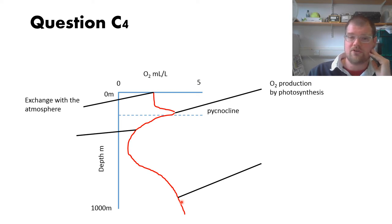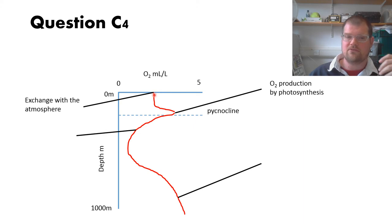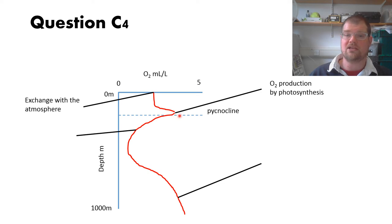There's oxygen production by photosynthesis at the base of the pycnocline. For extra marks, you could have noted that there's not so much photosynthesis going on at the very surface because UV radiation damages some of the cells. Also, the base of the pycnocline is where nutrients are supplied by upwelling, which is why the maximum of primary productivity is not at the surface.